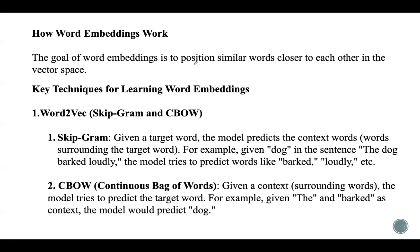The main goal of embeddings is to position similar words closer to each other in the vector space. All words that are similar to each other should be represented closer together. For example, the words 'cat' and 'dog' will have embeddings that are close to each other in this space because both of them are animals.